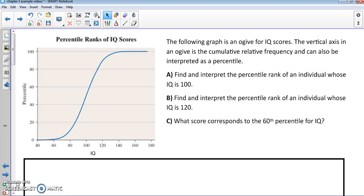So we're going to look at an ogive that represents the percentile rank of IQ scores. So we can kind of see how the two correspond. So we have the following graph as an ogive for IQ scores.